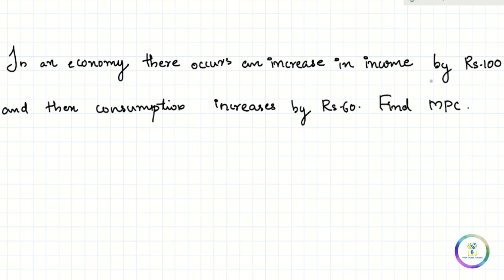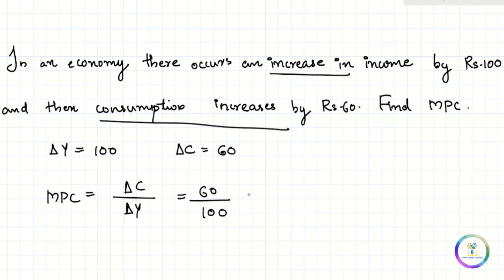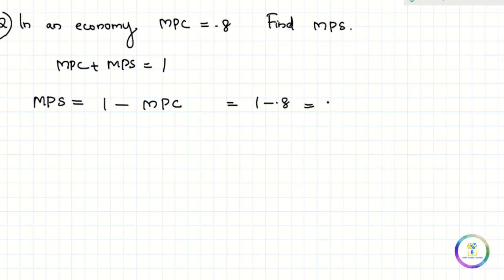In an economy, there occurs an increase in income by 100, so delta Y equals 100. Consumption increases by 60, so delta C equals 60. Therefore MPC equals delta C by delta Y, which is 60 divided by 100, equals 0.6.